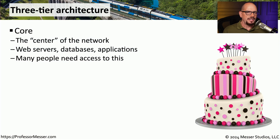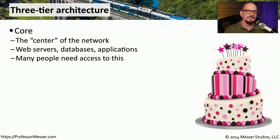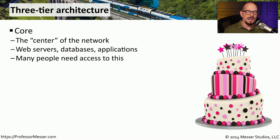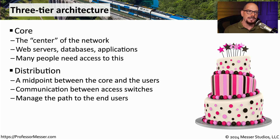Many enterprise networks take advantage of a three-tiered architecture. This is a very common design, and you'll find many organizations use a three-tiered network design. This starts with the core of the network, where we might have the central point for all of our resources — our servers, our applications, our databases, and other critical points are contained within the core of the network.